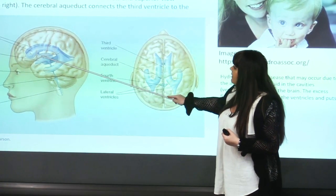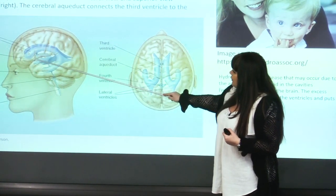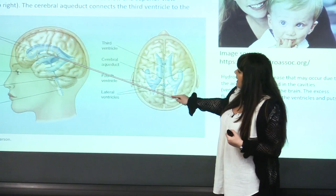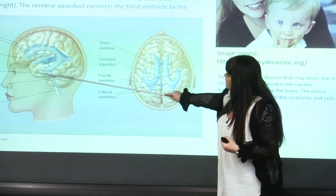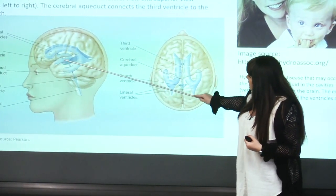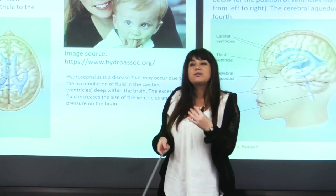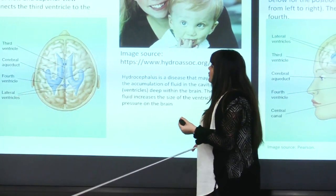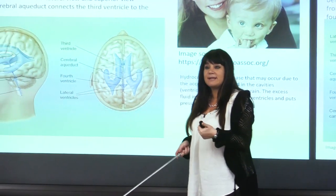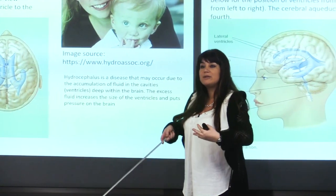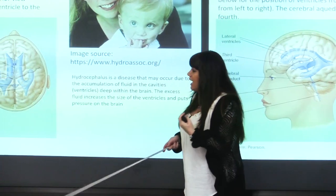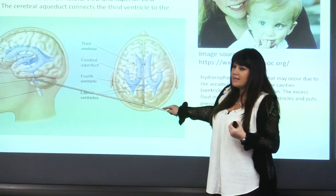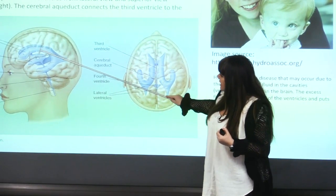The two lateral ventricles are connected to the third ventricle via a small structure called the interventricular foramen — like a pipe. Then there is a canal called the cerebral aqueduct, which connects the third ventricle with the fourth ventricle. The ventricular system is filled with cerebrospinal fluid, which supports, protects, and nourishes the brain, and is involved in removing metabolic waste from brain tissues.